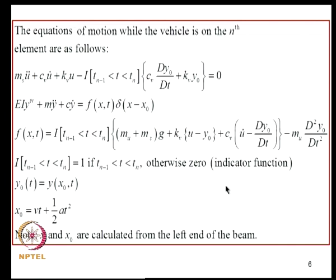The equation of motion while the vehicle is on the nth element is as follows: this is the oscillator equation. We use an indicator function to indicate that the force is valid only when the element is carrying the load — the vehicle exists on the element over the time period T_{N-1} to T_N, and the indicator function takes the value 1 when T is in this range, otherwise 0. This is the wheel force term, again multiplied by an indicator function.